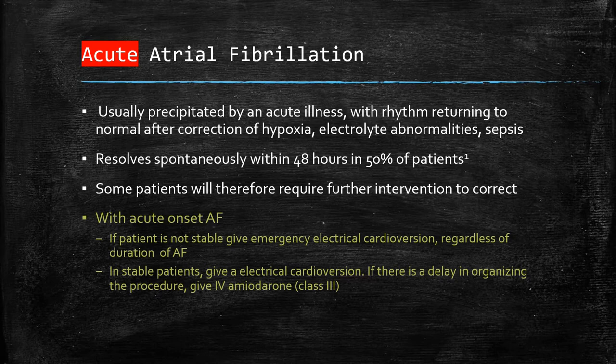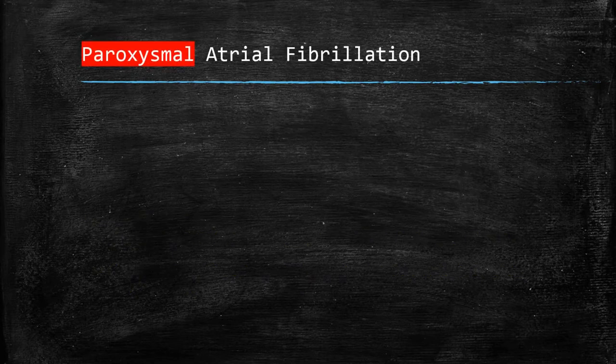Why does duration matter? The greater the AF goes on for, the more likelihood of clot development. In a stable patient, electrical cardioversion is also recommended, and if there is a delay, give IV amiodarone.